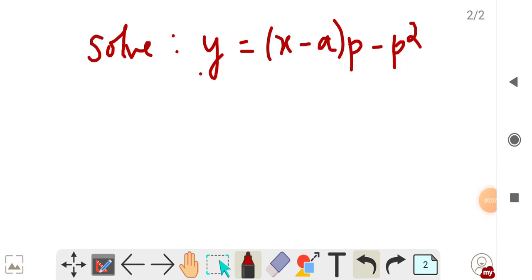So here we have another problem in differential equation of first order and higher degree. We observe the equation: y equals px minus ap minus p squared.